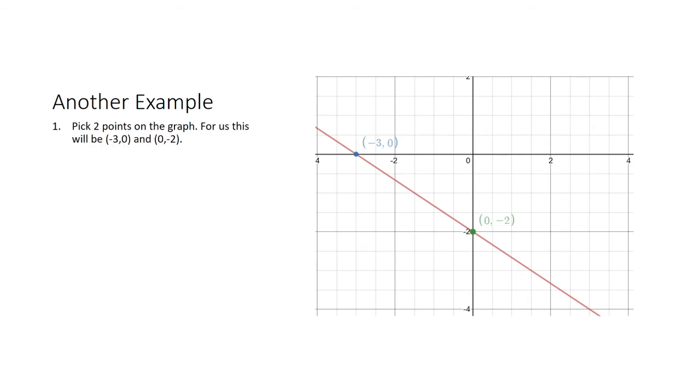Let's look at another example. We're given this graph. We want to pick two points on the graph, so I just chose (-3,0) and (0,-2).